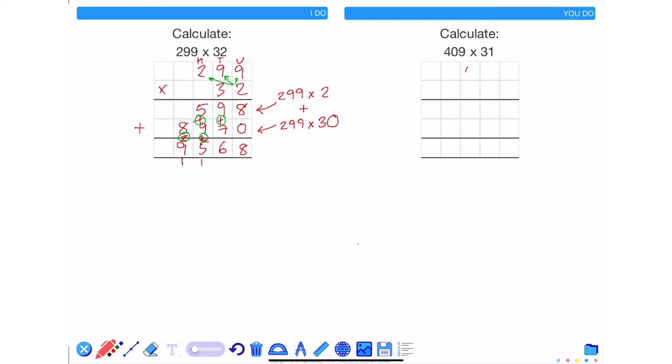So as we did before, place 409 and 31 into our columns. The first question that I'm going to answer is 409 times by 1. I'm then going to work out 409 times by 30, add the answers together, and this will give me the answer to the original problem.